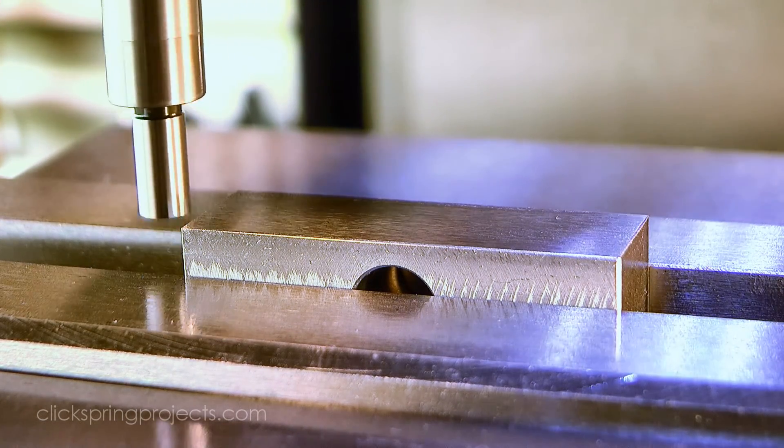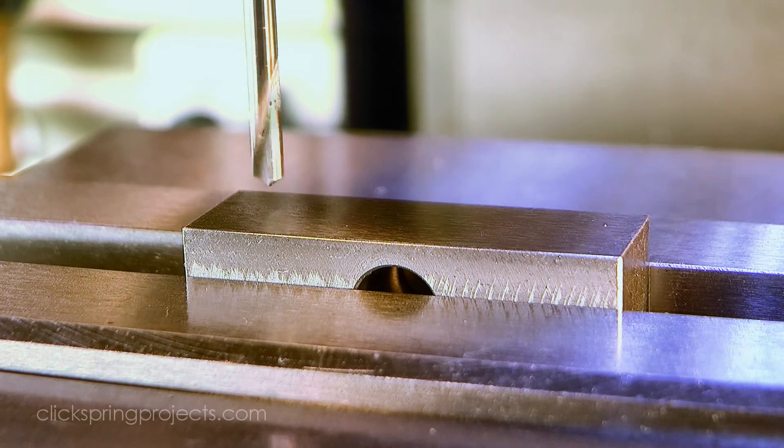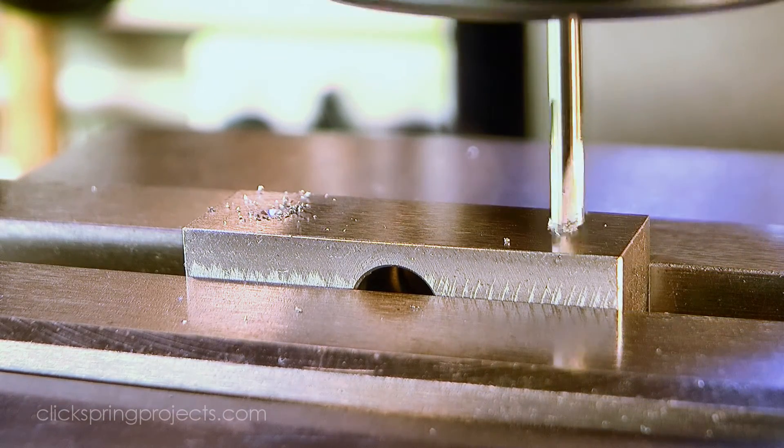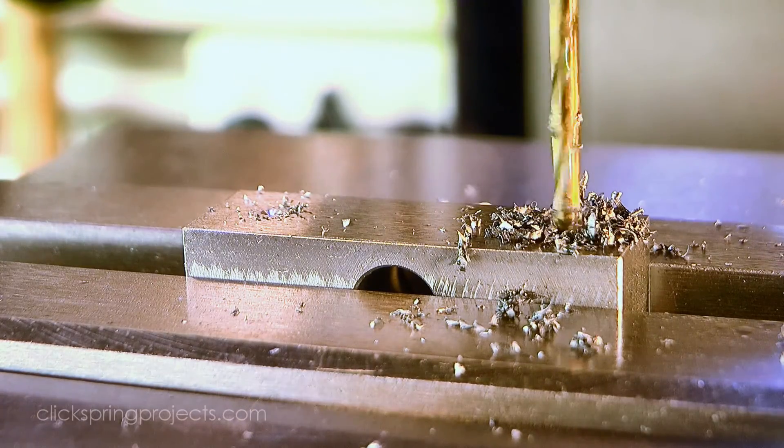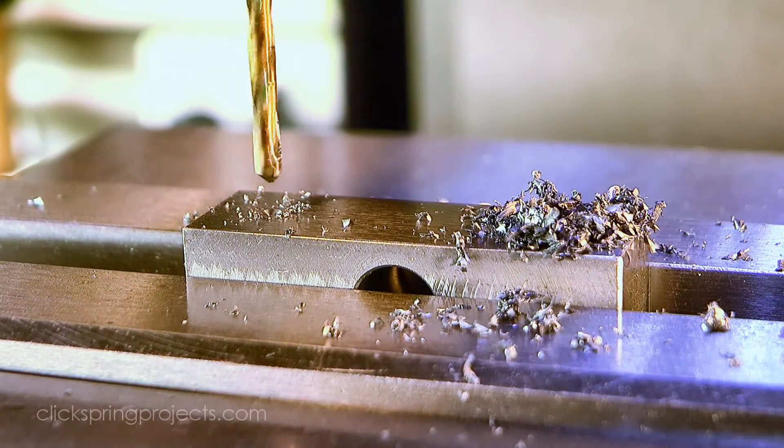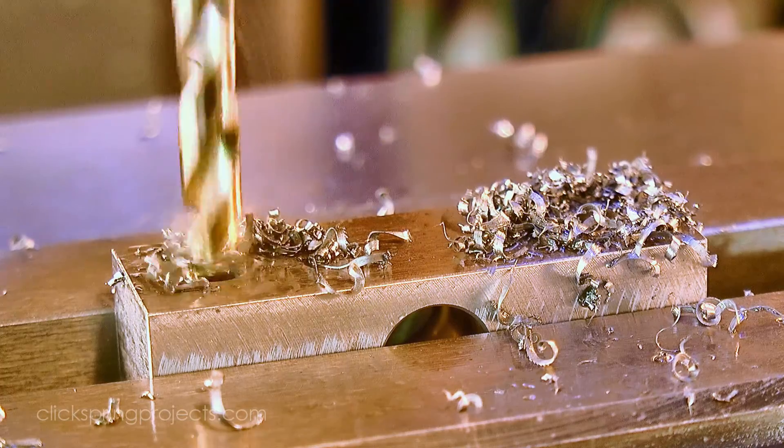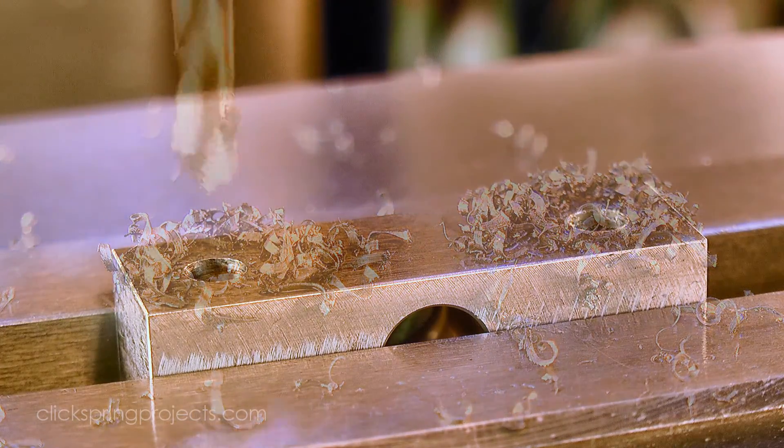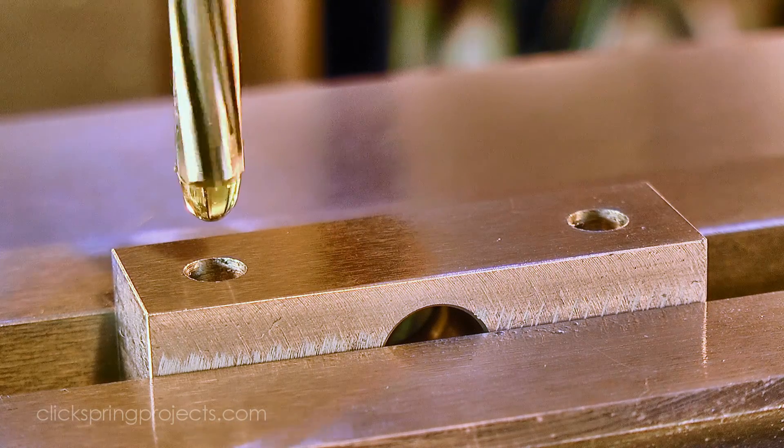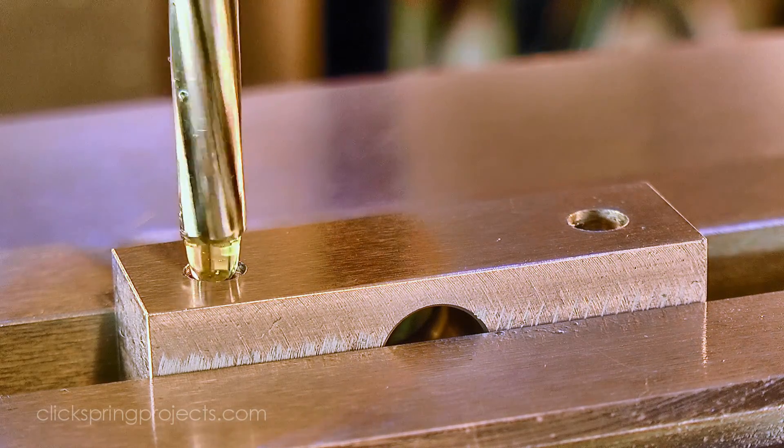A wiggler was again used to identify the central axis of the part, and the pivot screw hole positions were drilled all the way through with the tapping drill size for the screw thread. The same positions were then drilled and reamed half of the way through, to the correct clearance size for the shouldered sections of the pivot screws.